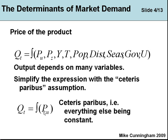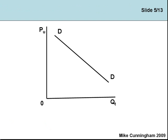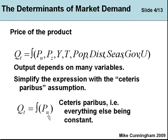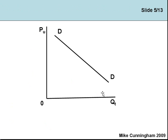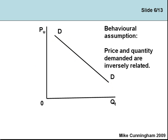Ceteris paribus enables us to get down to two variables — quantity per unit of time and price per unit — and if we've got two variables we can draw a diagram. Here are our two variables: price per unit on one axis and quantity per unit of time on the other. What we're seeing here is that the demand curve slopes downwards. It's a behavioural assumption: price and quantity are inversely related. If the price falls we buy more; if the price goes up we buy less — a reasonable assumption in most cases.